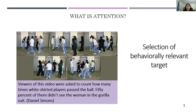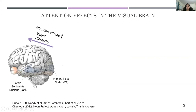This attentional selection has been shown to increase accuracy in detection, discrimination, and search across all sensory modalities. A lot of previous work has focused on visual attention because we have a very deep understanding of the structure and function of visual areas. Attention effects have been found throughout the visual brain, including early stages such as the LGN — the lateral geniculate nucleus, which is the first synapse after the retina — as well as primary visual cortex V1. These effects generally increase in size along the visual hierarchy.